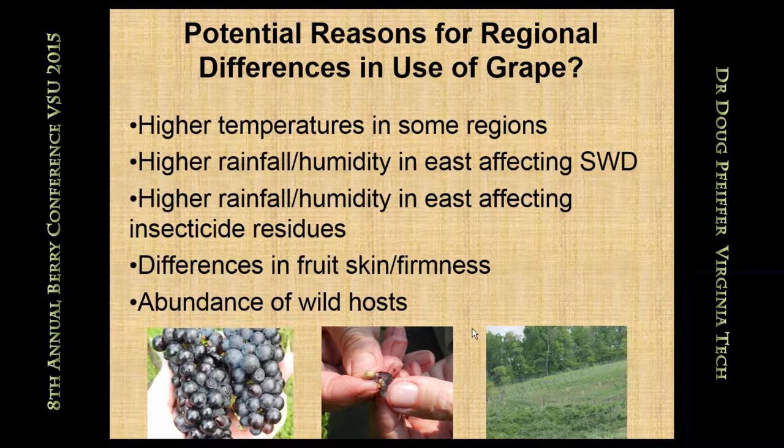What we're seeing in the east is we do see them getting into grapes in commercial settings. This is partly because of related factors. Drosophilids like humidity — they don't like hot and dry. In California it's hot and dry, but our environment has conditions that are better for Spotted Wing Drosophila. Because of the added rainfall, we also have a lush environment outside our plantings with a lot of wild hosts.